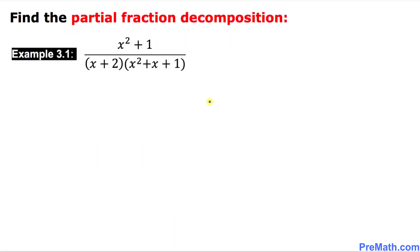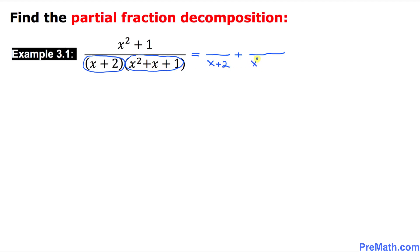Here is our very first example, and we are going to find the partial fraction decomposition of this rational expression. We focus on the denominator: the first factor is linear, and the second one is quadratic. So we have two factors, meaning we are going to get two fractions — the first one plus the next one. For the first, I put down x plus 2 in the denominator; the next one is quadratic since its highest power is 2.